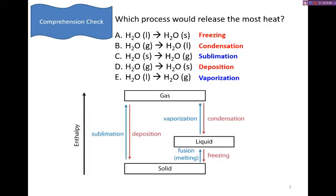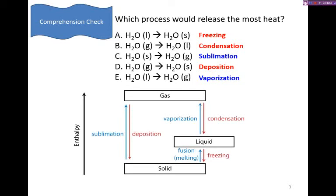Alright, so let's take a look at this. When we go from low energy state, like a solid, to higher energy states, like liquid and gas, that requires an input of energy. So the processes going from low to high, melting (also called fusion), vaporization and sublimation, those require energy. That's an input. That's endothermic.